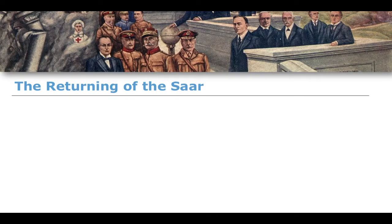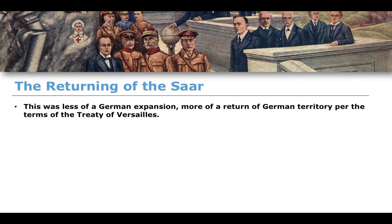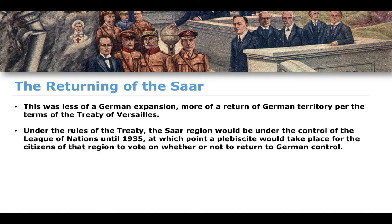There was a lot more success in relation to territories that were either taken or affected as a result of the Treaty of Versailles. For example, the Saar coalfields — though this was less of an aggressive expansion and more of a returning of German territory. Under the terms of the Treaty of Versailles, the Saar region, a very heavily industrialized region, would be under the control of the League of Nations until 1935, at which point a plebiscite — a referendum, a vote — would take place.